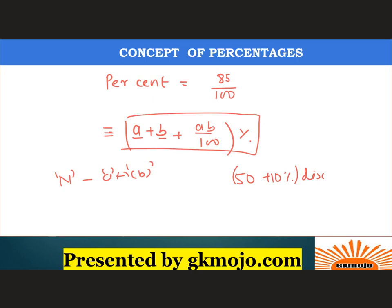This does not mean it's a 60 percent discount. So in this case, how will the effective discount be calculated? It will be minus 50 minus 10 plus 50 into 10 upon 100. Because this minus minus will become plus. So we just input a value of a which is negative and b which is negative. This formula has a lot of applications, so please keep this in mind. So let's jump onto the questions now.